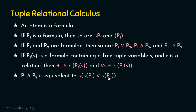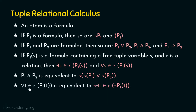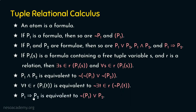Key equivalences: P1 and P2 is equivalent to negation of (negation P1 or negation P2) — the double negation cancels to give P1 and P2. Also, 'for all t belonging to R, P1(t)' is equivalent to 'negation of (there exists t belonging to R such that negation P1(t))' — the universal quantifier becomes existential with negation applied on both sides. And P1 implies P2 is equivalent to negation of P1 or P2.